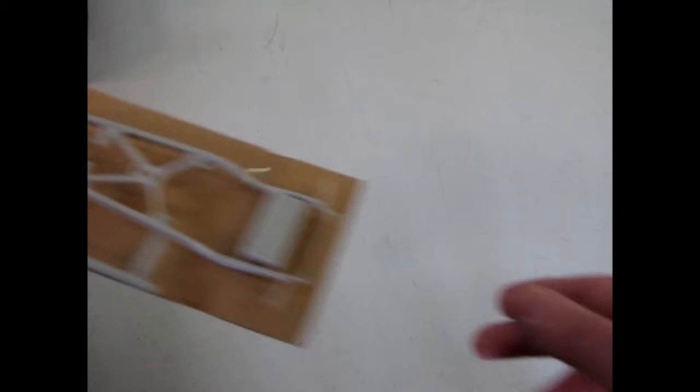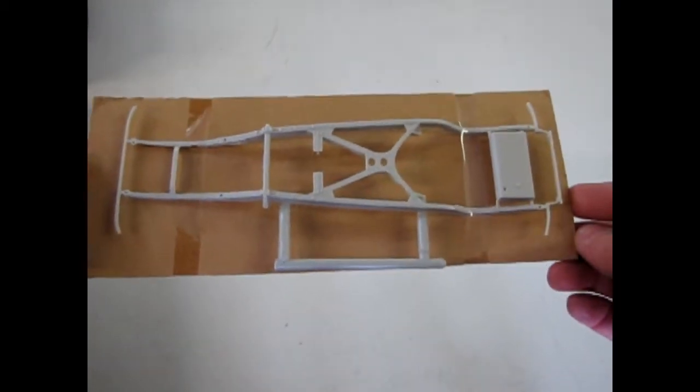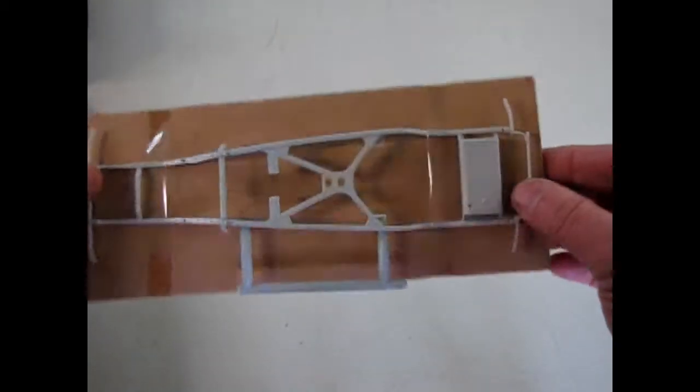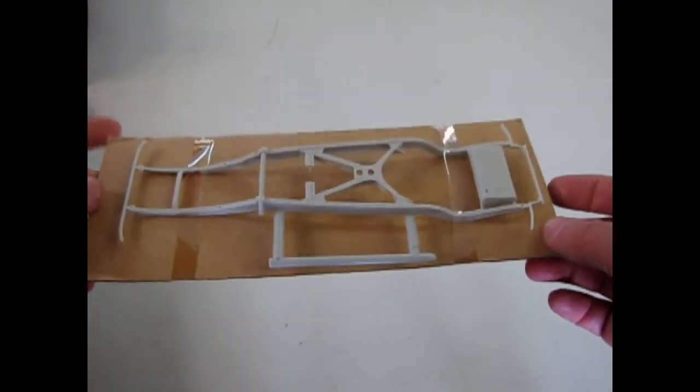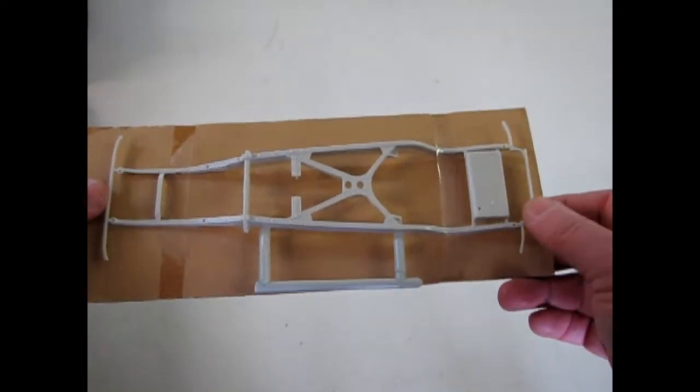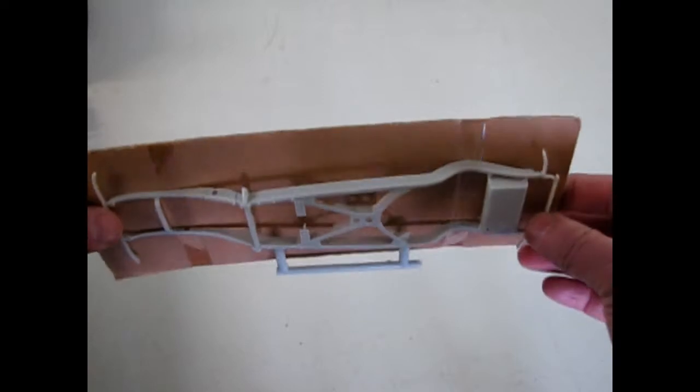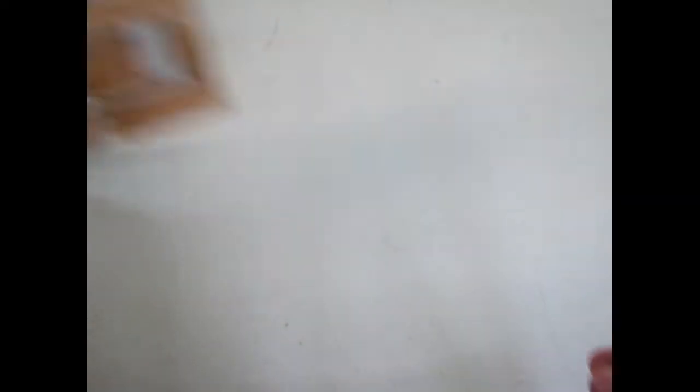And in this particular kit, AMT put the frame on a piece of cardboard, which kept it nice and straight in the box. I have an earlier edition of this kit and the frame was warped beyond belief. So I'm glad that they finally supported it under there.